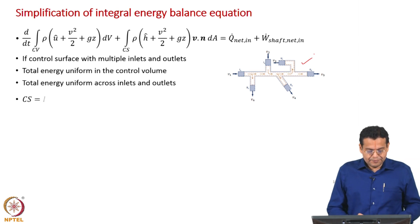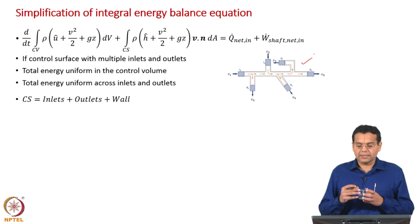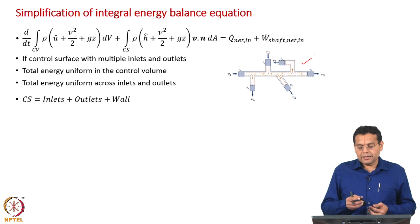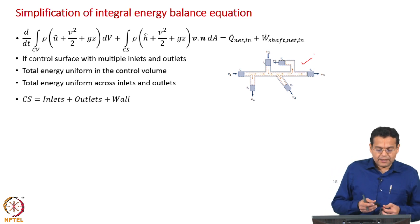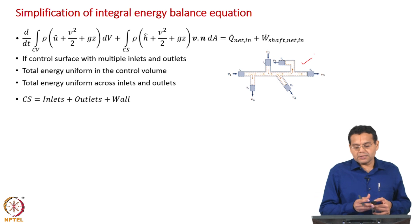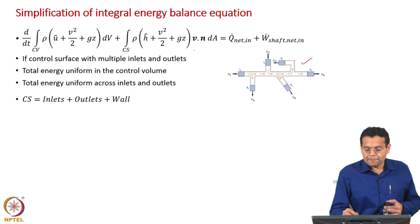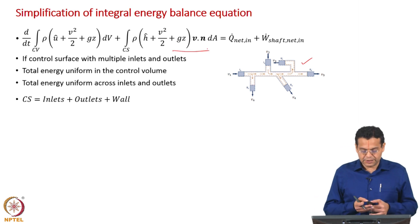How do we usually split the control surface? We split it into inlets, outlets, and the wall. Wherever there is a wall, the convection term does not contribute because the velocity is zero.